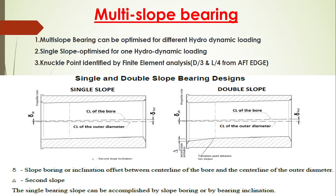Now let's see how the multi-slope is optimized for lubrication. The multi-slope can be optimized for different hydrodynamic load conditions — because of the transition there will be oil present under different load conditions, preventing bearing contact with the propeller shaft. A single slope can be optimized for only one hydrodynamic loading condition, but the multi-slope can be optimized for different conditions. That is the advantage.